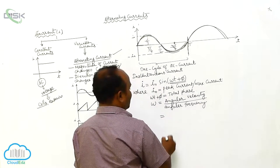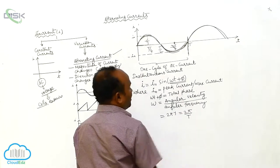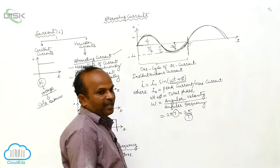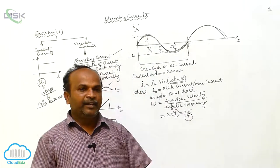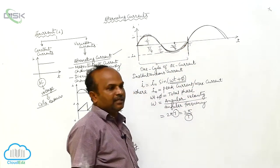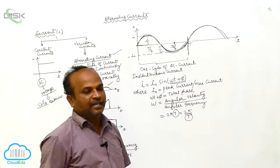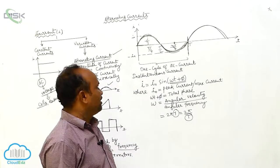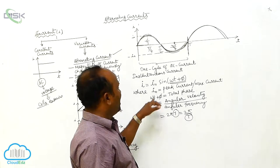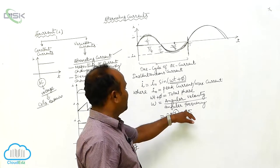Omega is equals to 2πν, or equals to 2π by T. Here, T is the period of time — the time required for one complete full cycle of AC current. Frequency ν is the number of AC cycles per second.